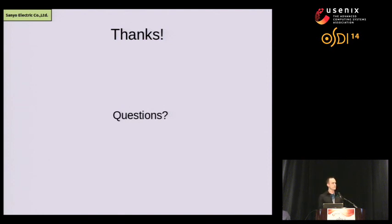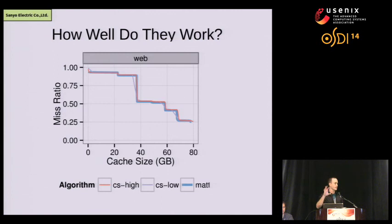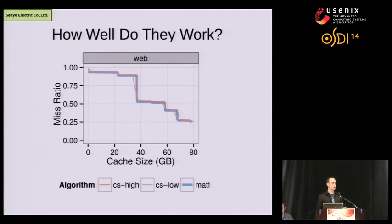Question from Tim Wood, George Washington University: You mentioned error is affected by the shape of the curve — can you use that as feedback into your system to detect the workload or adapt somehow? Yes, that's a great question. If we do simple elbow detection in these curves and notice very jagged curves, we can dynamically increase the fidelity of the counters to introduce less error. And those elbows are precisely what you care most about — that's where you get your biggest performance gains.